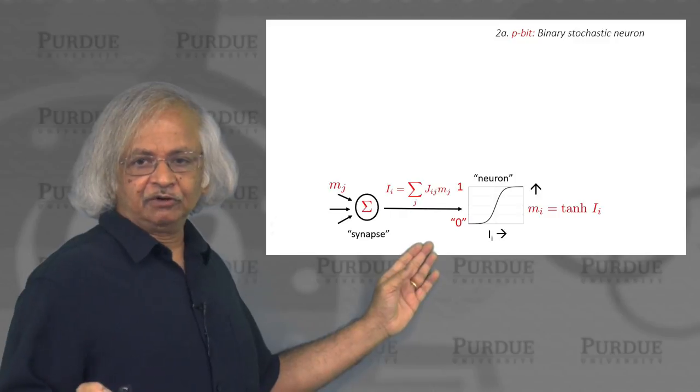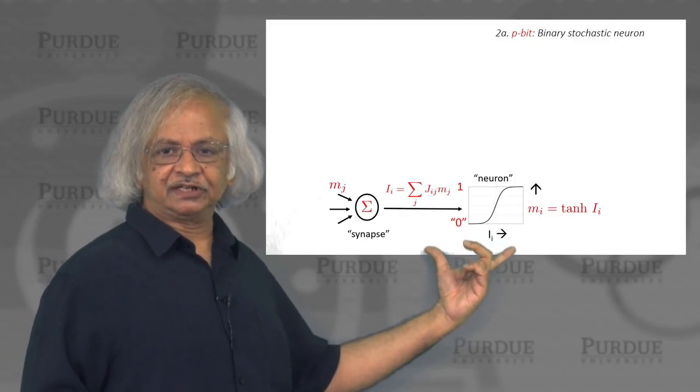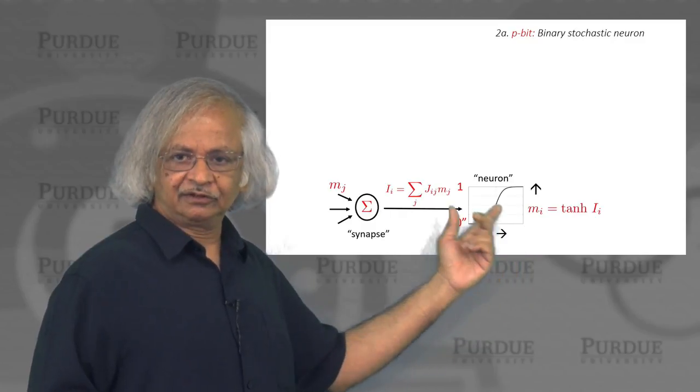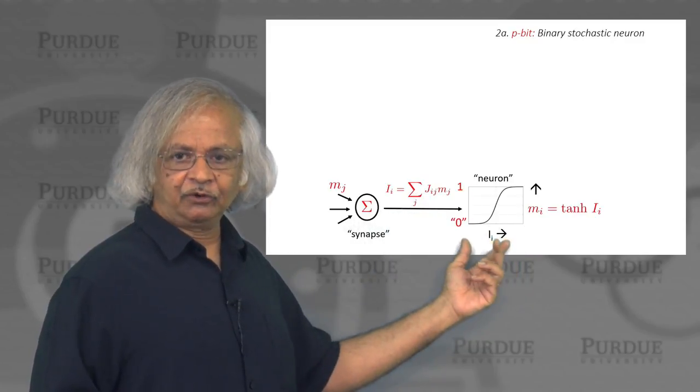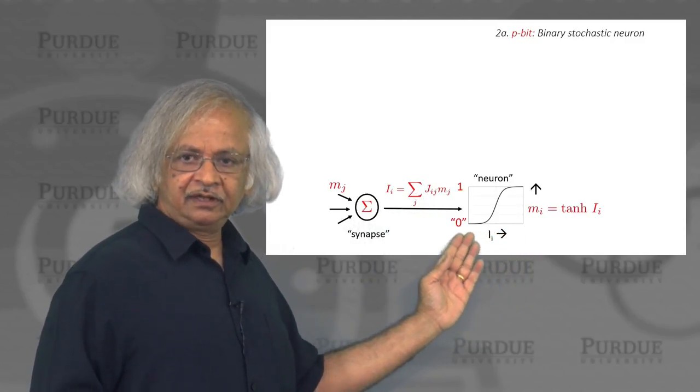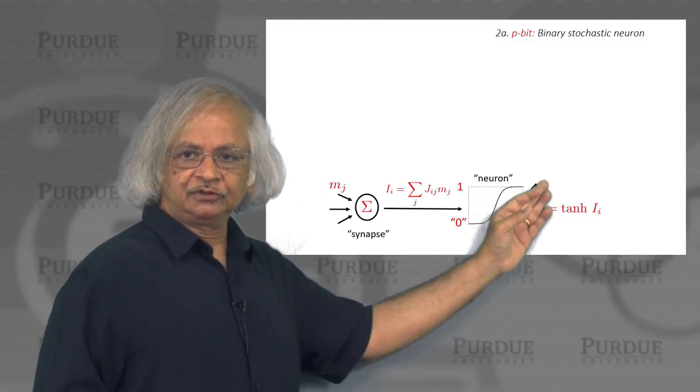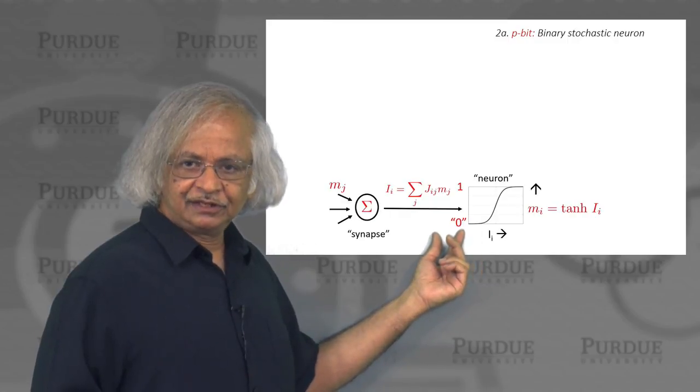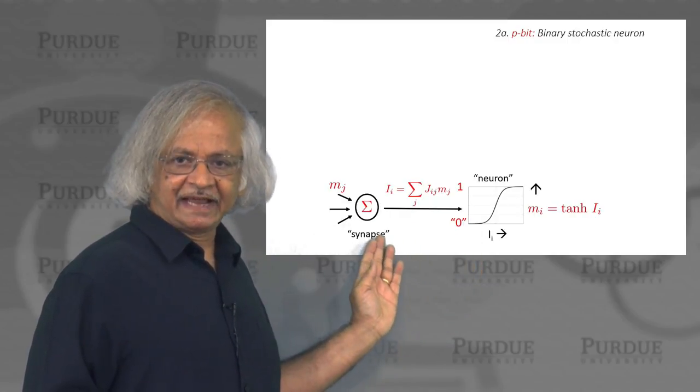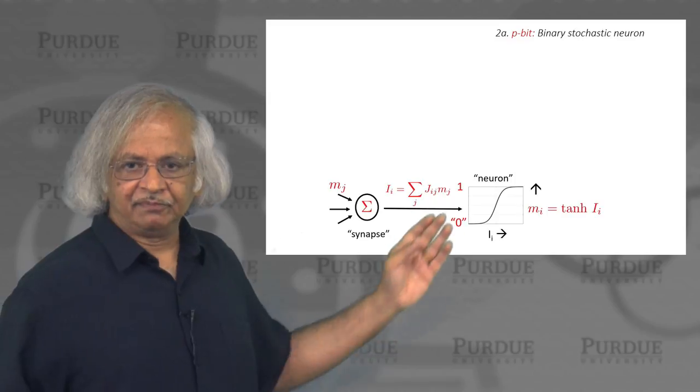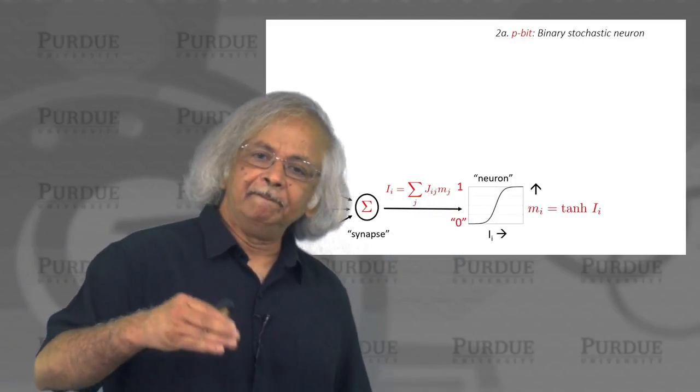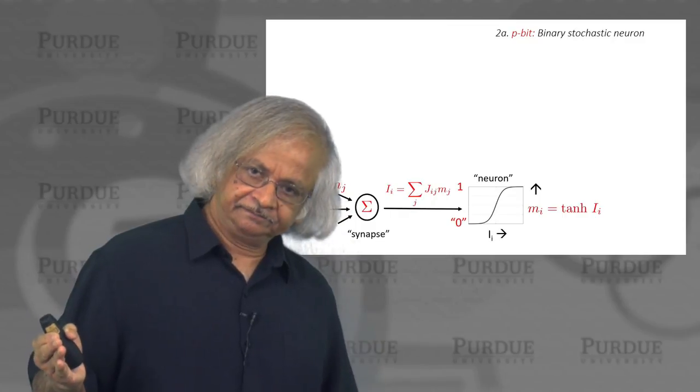If you Google the word neural networks, you'd usually see a picture something like this. There would be a threshold element or the neuron, one where depending on the input, it goes from one stable value to another. The input to these neurons are derived from the synapse, which sums up, which gets a weighted sum of the outputs of many other neurons.